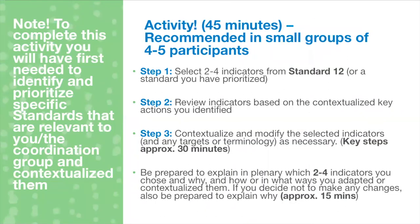For those wanting to do an activity — if this is a contextualization workshop — I will briefly explain a quick activity of about 45 minutes, recommended to be done in small groups of about four to five participants. Please note that this activity should be completed only if you have already selected and identified your priority standards that you will be contextualizing with the wider child protection coordination group, and should be aligned with selecting and prioritizing indicators in line with those priority standards.